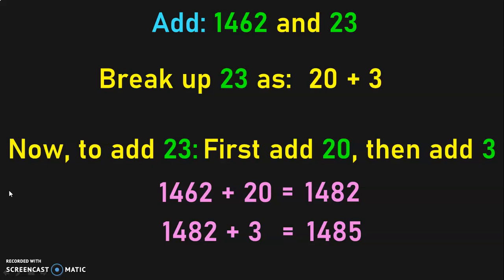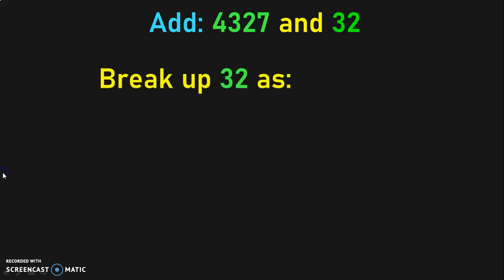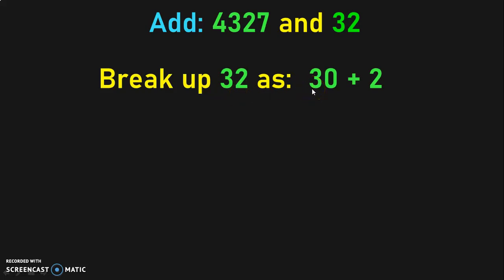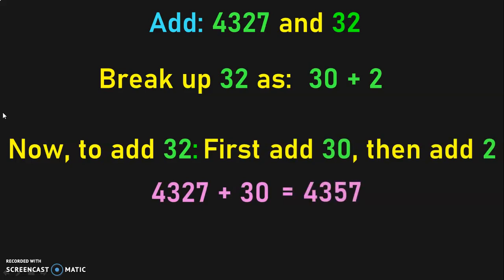Let us see the same concept with another example. Add 4327 and 32. We are going to break up the number 32 as 30 plus 2. Always remember that we will look out for the tens which is closer to the number we are going to add. In this case, the ten closer to 32 is 30. So, 4327 plus 30 will give you 4357. Next, add 4357 plus 2 which will give you 4359. This is one method of doing mental math.